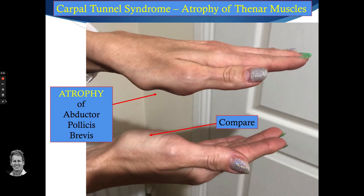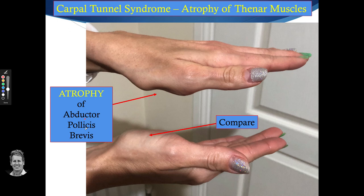This is a normal hand — look at the fullness of the musculature here. Now look at this one: notice the indentation. This lady had a chronic carpal tunnel syndrome, diagnosed and untreated for a couple of years. You can clearly see wasting of the abductor pollicis brevis. She was also very weak on the pinch grip, demonstrating atrophy of that muscle.